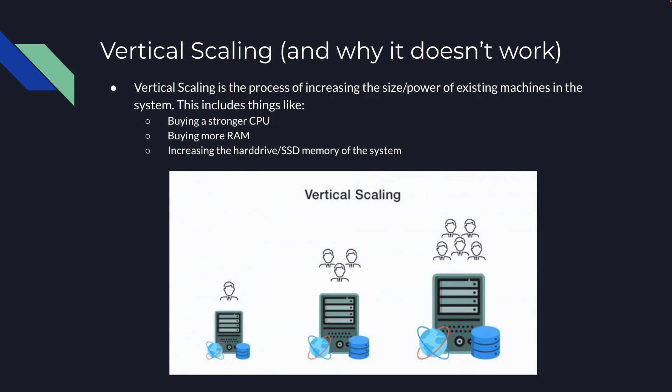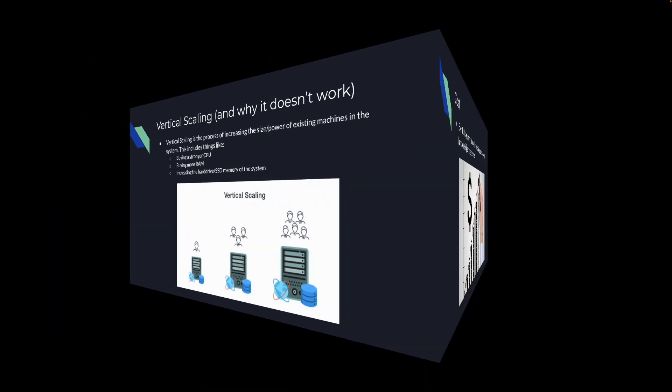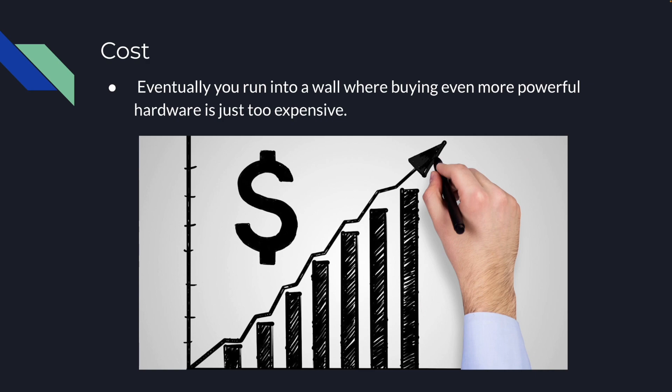Let's talk about vertical scaling and why it doesn't work. Vertical scaling is the process of increasing the size and power of existing machines in the system. This includes things like buying a stronger CPU, buying more RAM, or increasing the hard drive or SSD memory of the system. You can think about it as increasing a single machine by adding stronger components to it.